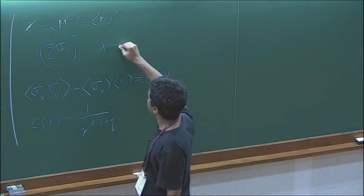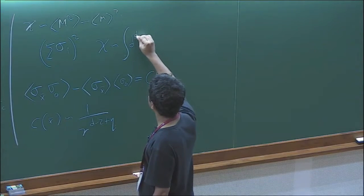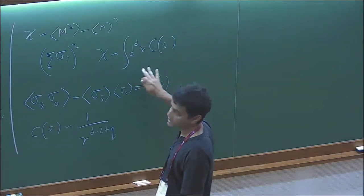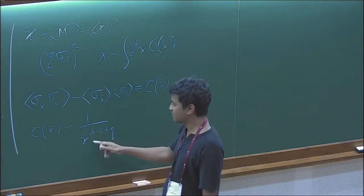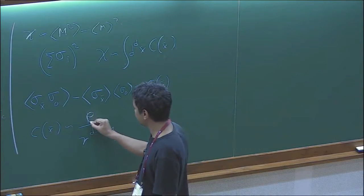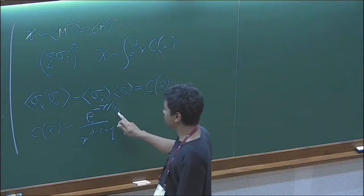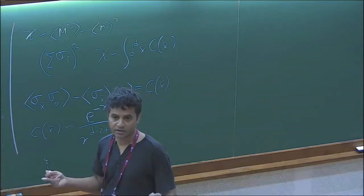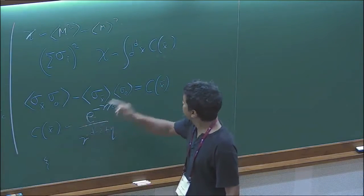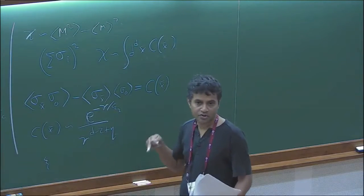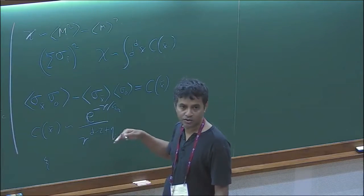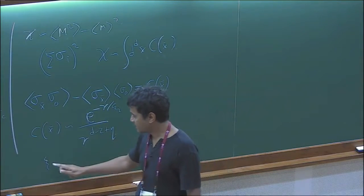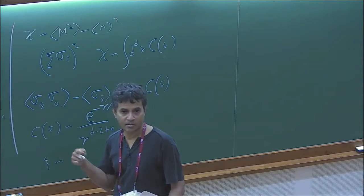You can show that chi is the integral of C. So you need this to be long-range for this integral to diverge. Typically you find that away from the critical point the correlation goes as e^{-r/xi}, where xi is the correlation length. This correlation length also diverges as you approach T_C — because if it were finite the integral would be finite. So as you approach T_C, this becomes infinite and you get long-range correlations.